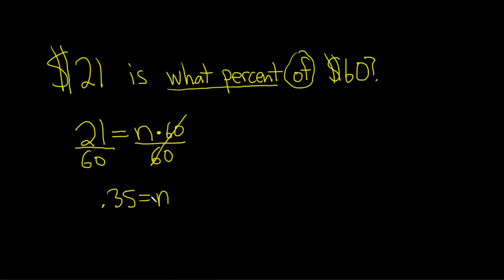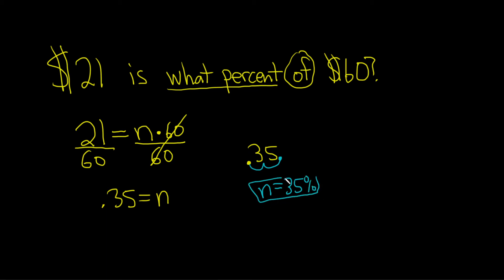Now we just have to turn this into a percentage. So if we have 0.35, to turn this into a percentage we just take the decimal and move it to the right two places. So n is equal to 35%, and that would be the final answer. Let's read it back together: 21 is 35% of $60.